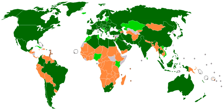The IEC also manages three global conformity assessment systems that certify whether equipment, systems or components conform to its international standards. The IEC charter embraces all electrotechnologies including energy production and distribution, electronics, magnetics and electromagnetics, electroacoustics, multimedia, telecommunication and medical technology, as well as associated general disciplines such as terminology and symbols, electromagnetic compatibility by its Advisory Committee on Electromagnetic Compatibility (ACEC), measurement and performance, dependability, design and development, safety and the environment.